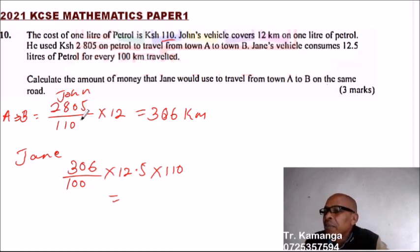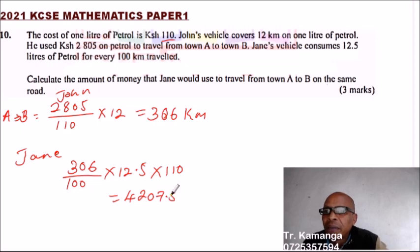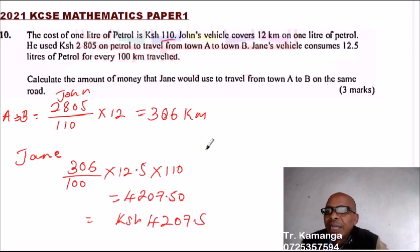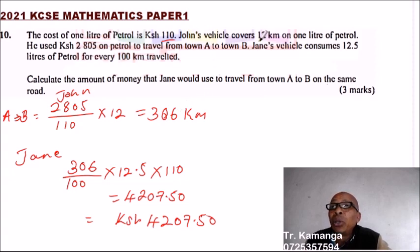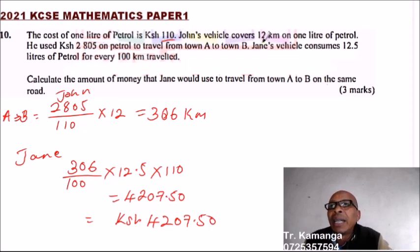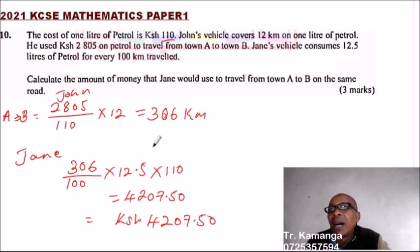That gives 4207.50 Kenyan shillings, which equals 4207 shillings and 50 cents. The tricky part is finding the number of kilometers using John's information — the 12 km per liter and cost of 110 per liter — and then using that distance to compute the amount Jane would spend. By doing this correctly you'll be able to get three marks.